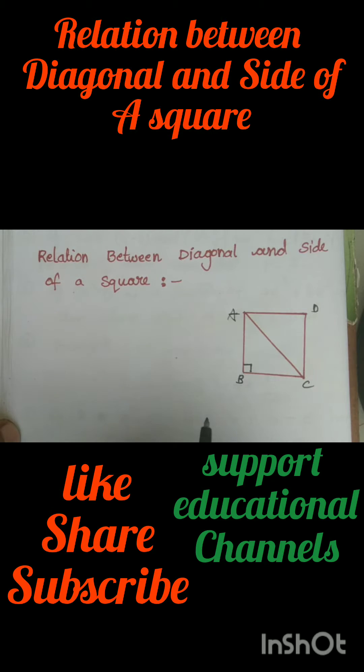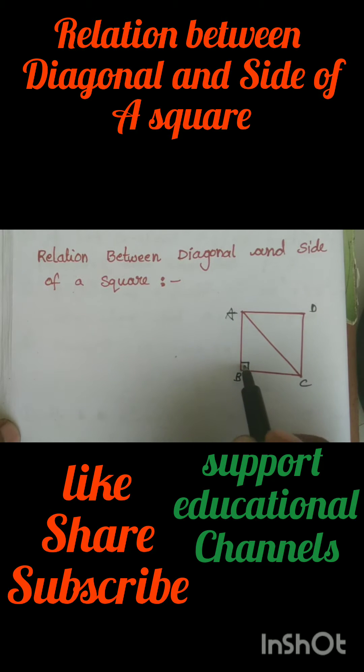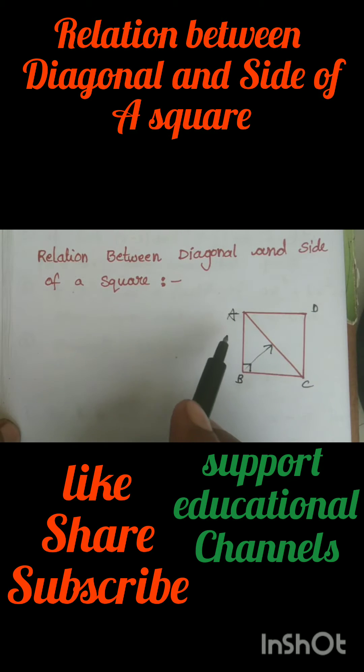Now in triangle ABC, the right angle is at B. The side opposite to the right angle is called hypotenuse. Here AC is our diagonal, and in triangle ABC, AC is our hypotenuse.